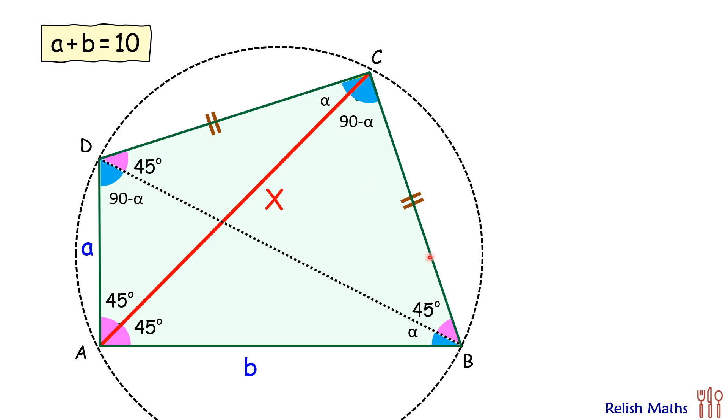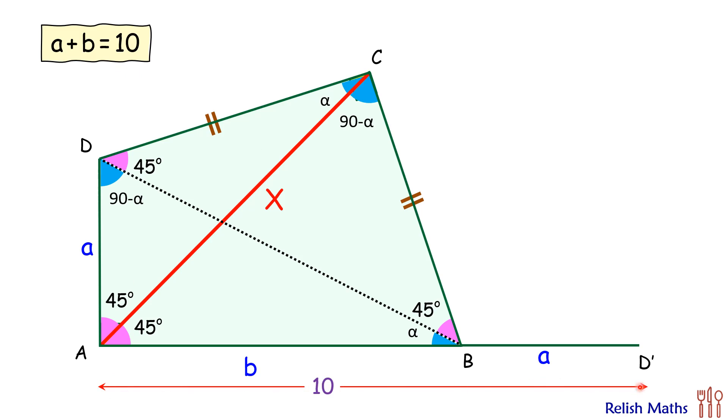Okay, that was all about angle chasing. Now let's do one more construction and extend AB to point D' such that this length BD' is same as AD, or a centimeters. But we know that a plus b is 10, so the full length AD' is 10 centimeters.